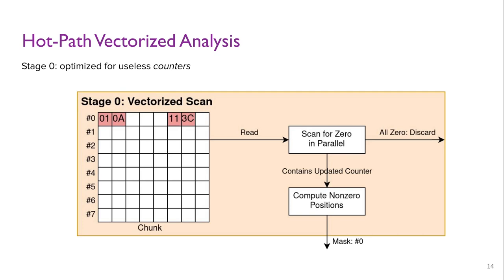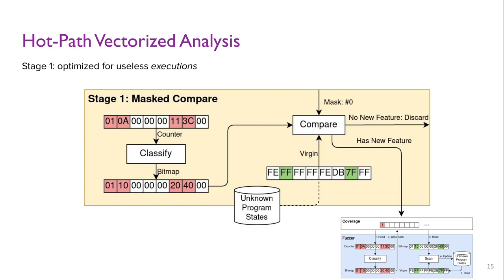At stage 1, RIF classifies the non-zero lanes of counters into a bitmap and checks for new program states. Since most executions contribute no new features, the logic of this stage is rather simple too. Only when a new interesting input is discovered does RIF transfer to stage 2, where the original algorithm runs a series of complex computations.